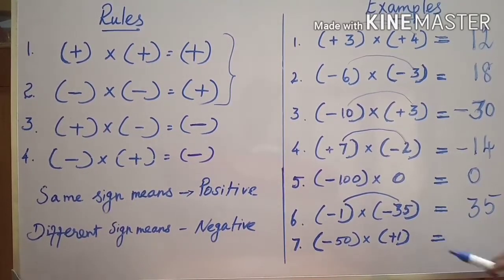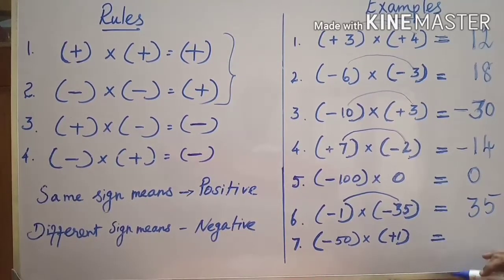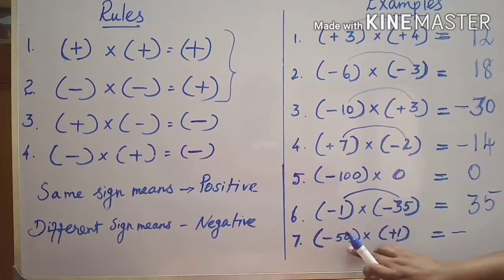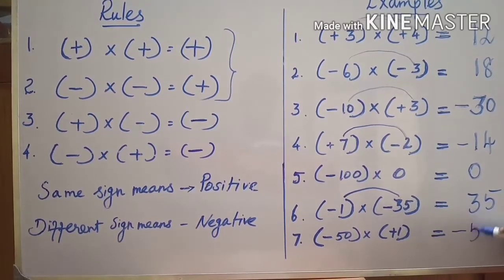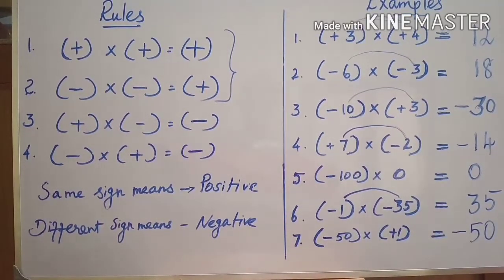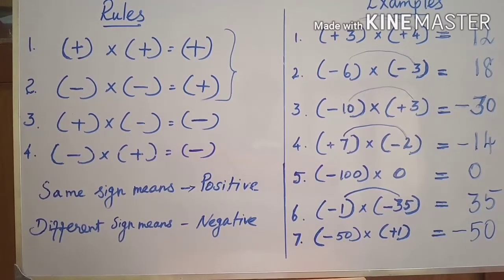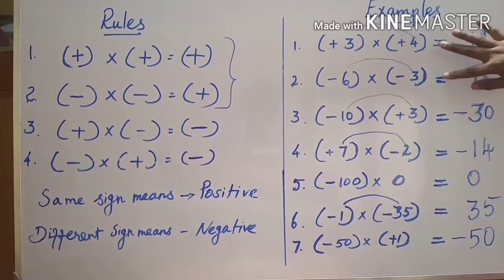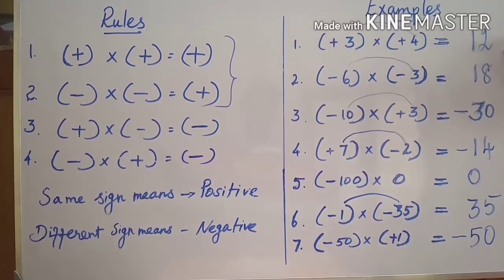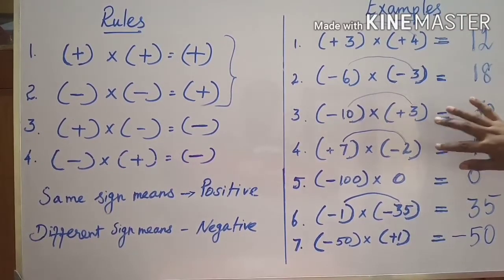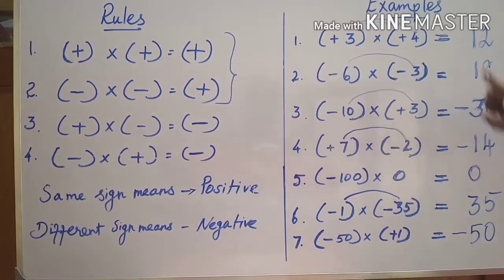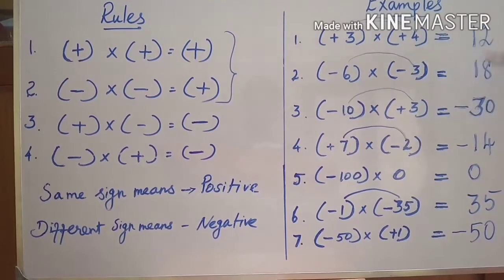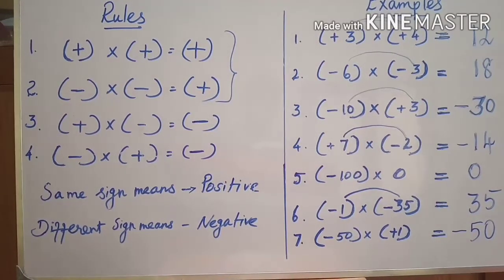Next: minus fifty into plus one. Different signs, so the answer is negative — fifty into one is fifty, and the answer is negative fifty. To summarize once more: if two integers have the same sign, the answer is positive; if two integers have different signs, the answer is negative. First find the product of the numbers, then look at the symbols and put the appropriate sign in the answer.